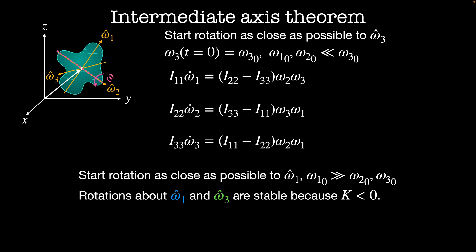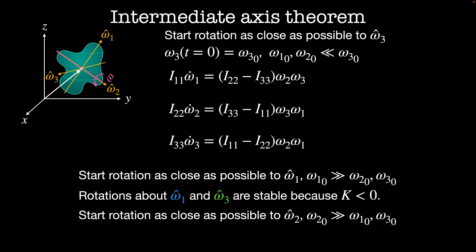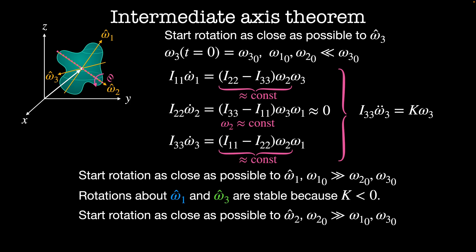However, if we look at rotations as close as possible to omega_2 — the direction about the intermediate moment of inertia — then omega_2_naught is much much greater than omega_1_naught or omega_3_naught. Playing the same game, omega_2 is approximately a constant. We differentiate and substitute as before, and get the same form of equation. Only this time, since i33 is greater than i22 and i22 is greater than i11, both terms are negative, so the overall k is positive. This means it's no longer simple harmonic motion — the modes grow exponentially, which tells us that rotations about omega_2 are unstable because k is greater than zero.